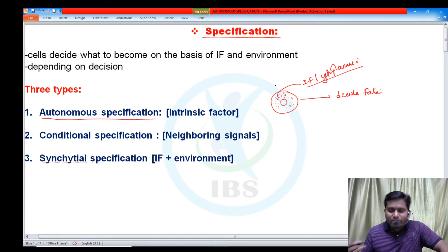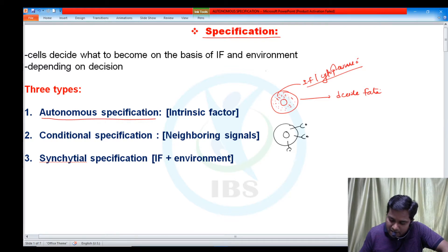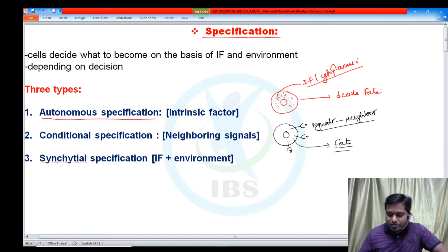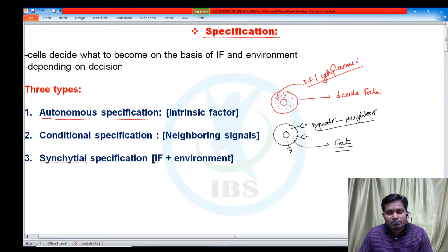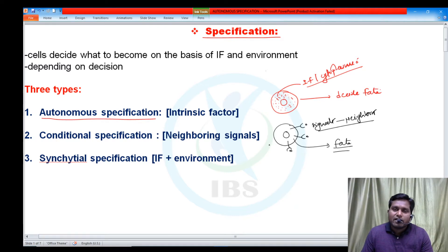Another type of specification is conditional specification, in which cells decide what to become in future based on their position, environment, or extracellular signals obtained from neighbors. When extracellular signals from neighbors decide the fate of the cell, such specification is called conditional specification because cells become what they are based on their position in the embryo and the type of signals and cells present in their surroundings.